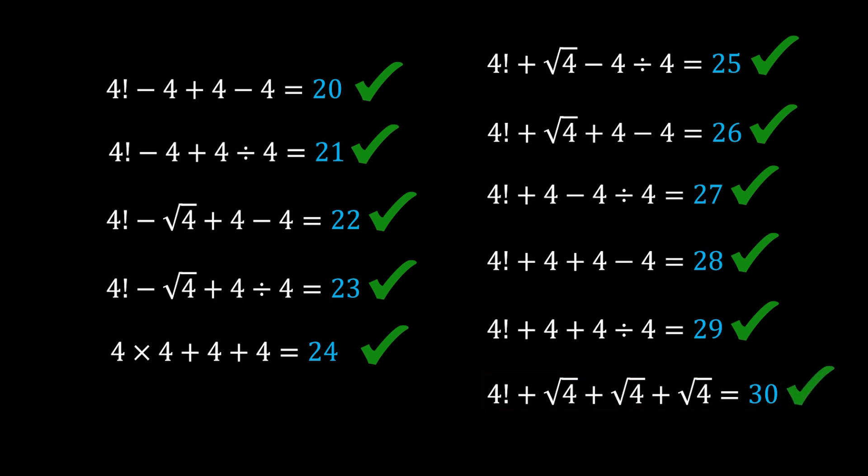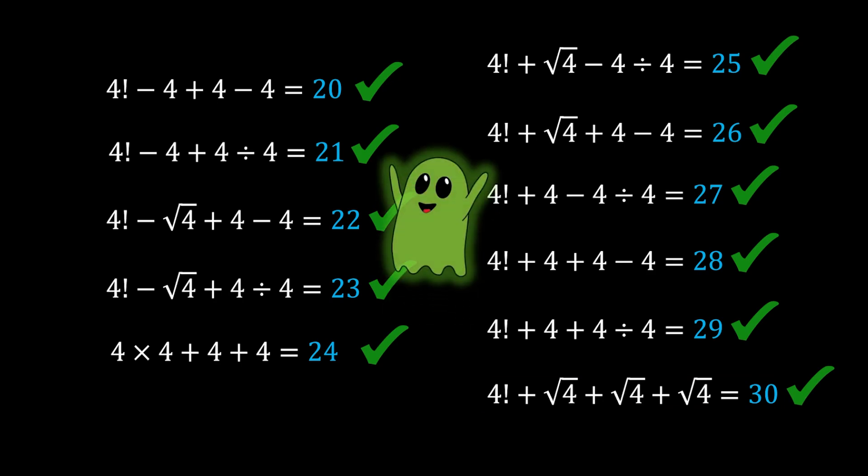We have all numbers from 0 to 30 using only four fours in line, without brackets in any case. I hope you enjoyed this video and managed to solve this yourself. If you found any other combinations — and trust me, there are tons — please write them in the comments. If you enjoyed the video, consider leaving a like and subscribing. Until next time, take care!